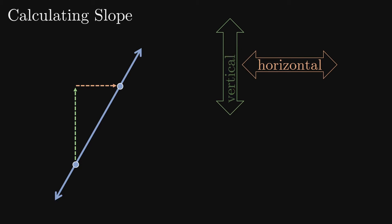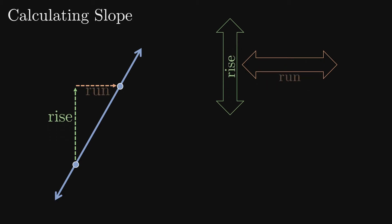We call the vertical change rise and the horizontal change run. The slope is simply the rise divided by the run.